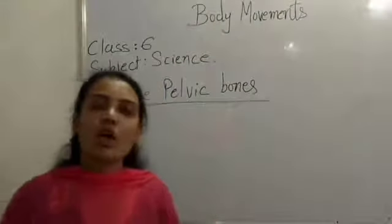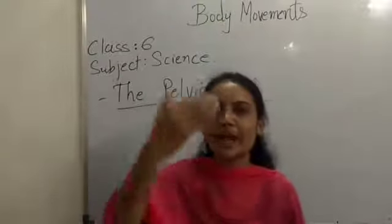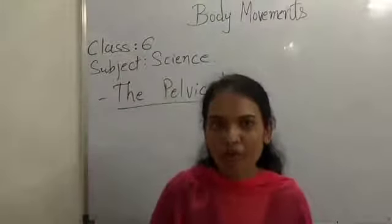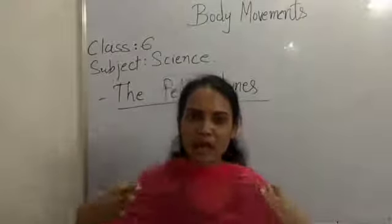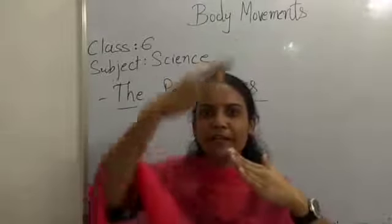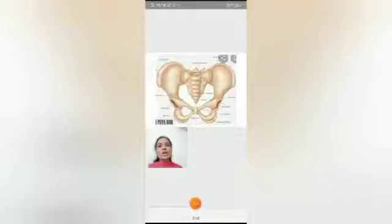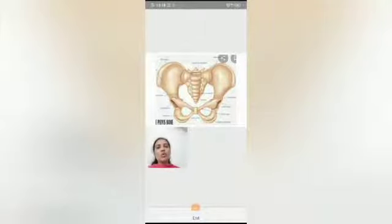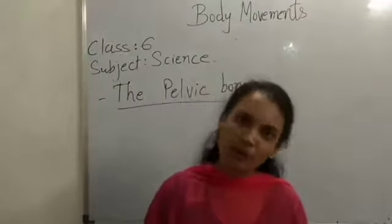The pelvic bone is also known as the hip bone, and it is present at the end of the vertebral column. Each hip contains three bones, and the two hip bones are joined together at the end of the vertebral column. This is the structure of the pelvic bone. This concludes the skeletal system of our body.